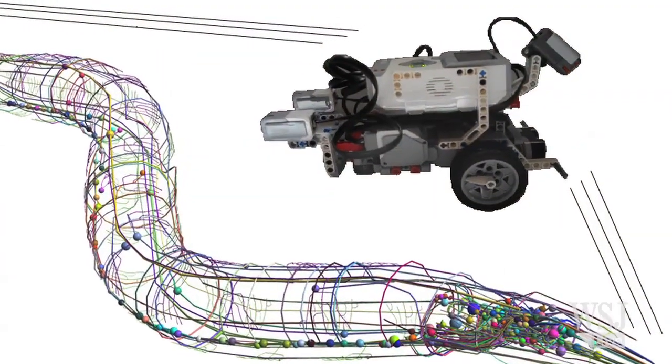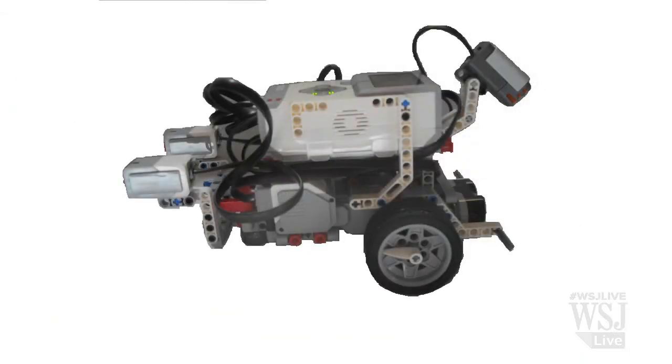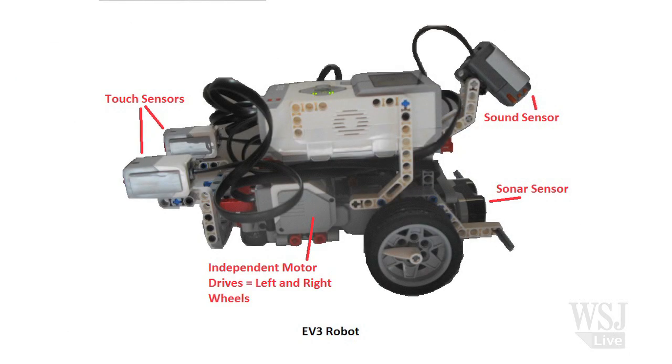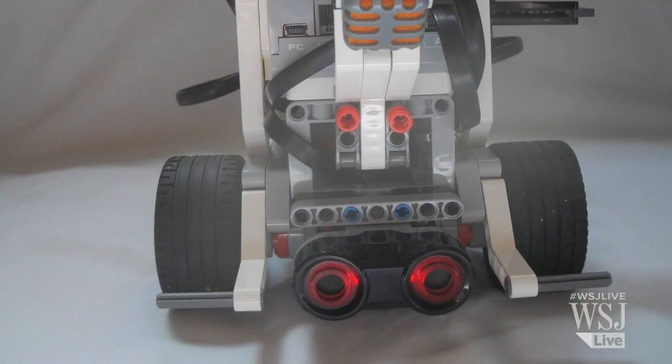The software uses sensors and motors to simulate the worm's behavior. Motors on both sides of the robot correspond to the motor neurons running down the left and right side of a real worm. And a sonar sensor in the robot simulates nose-touch sensory neurons in the worm's brain.